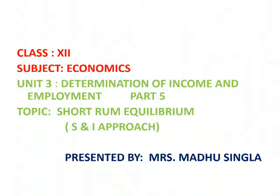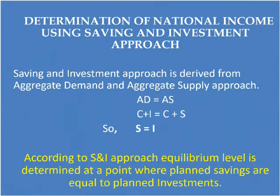Today we will discuss Short Run Equilibrium using the Saving and Investment Approach — the determination of National Income. The S&I Approach is derived from the Aggregate Demand and Aggregate Supply Approach: AD equals AS, meaning C plus I equals C plus S, so S equals I. According to the S&I Approach, the equilibrium level is determined at a point where Planned Savings are equal to Planned Investment.